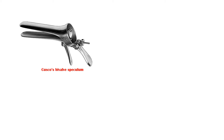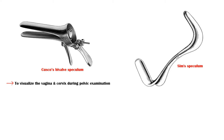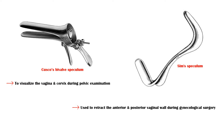Cusco's bivalve speculum is used to visualize the vagina and cervix during pelvic examination. Sim's speculum is used for both surgical and non-surgical procedures. It is used to retract the anterior and posterior vaginal wall during gynecological surgery, and it can also be used to examine utero-vaginal prolapses.